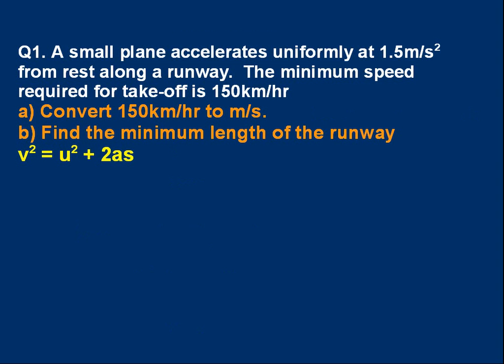Let's do some problem solving. There will be two problems. Question 1: A small plane accelerates uniformly at 1.5 m/s² from rest along a runway. The minimum speed required for take-off is 150 km/hr. Part a) Convert 150 km/hr to m/s. We're going to have to do that so we can use our SUVAT equation with the acceleration in m/s². We can't mix km/hr and m/s². Part b) Find the minimum length of the runway, which is simply the distance the plane has to travel to reach the take-off speed. Pause the video, see if you can do that for yourself.